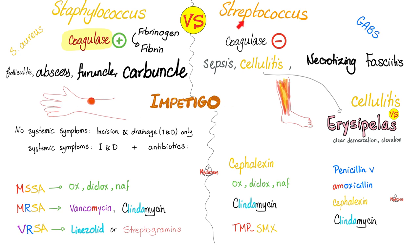Conversely, since streptococcus is coagulase negative, it cannot stay in one location — it cannot coagulate in one space, it will spread all over the place: sepsis, cellulitis, necrotizing fasciitis, and erysipelas.